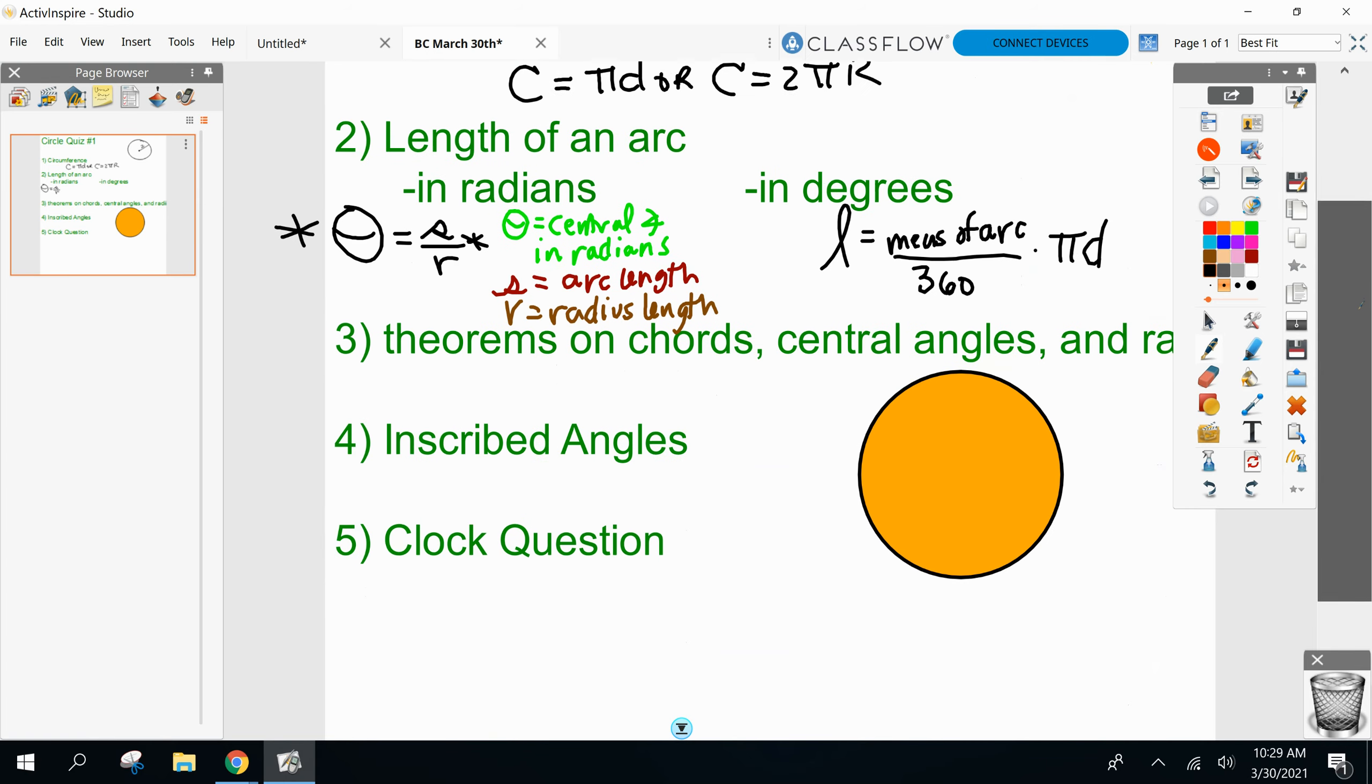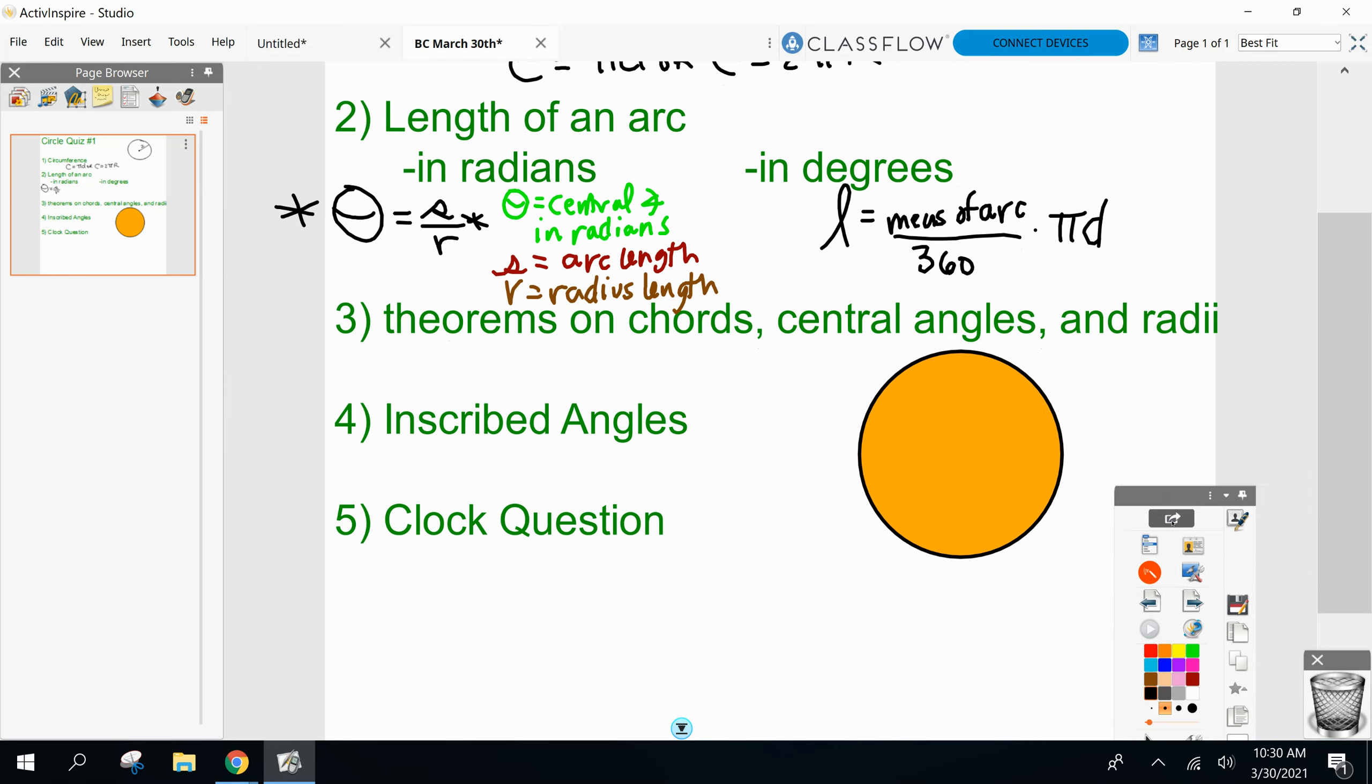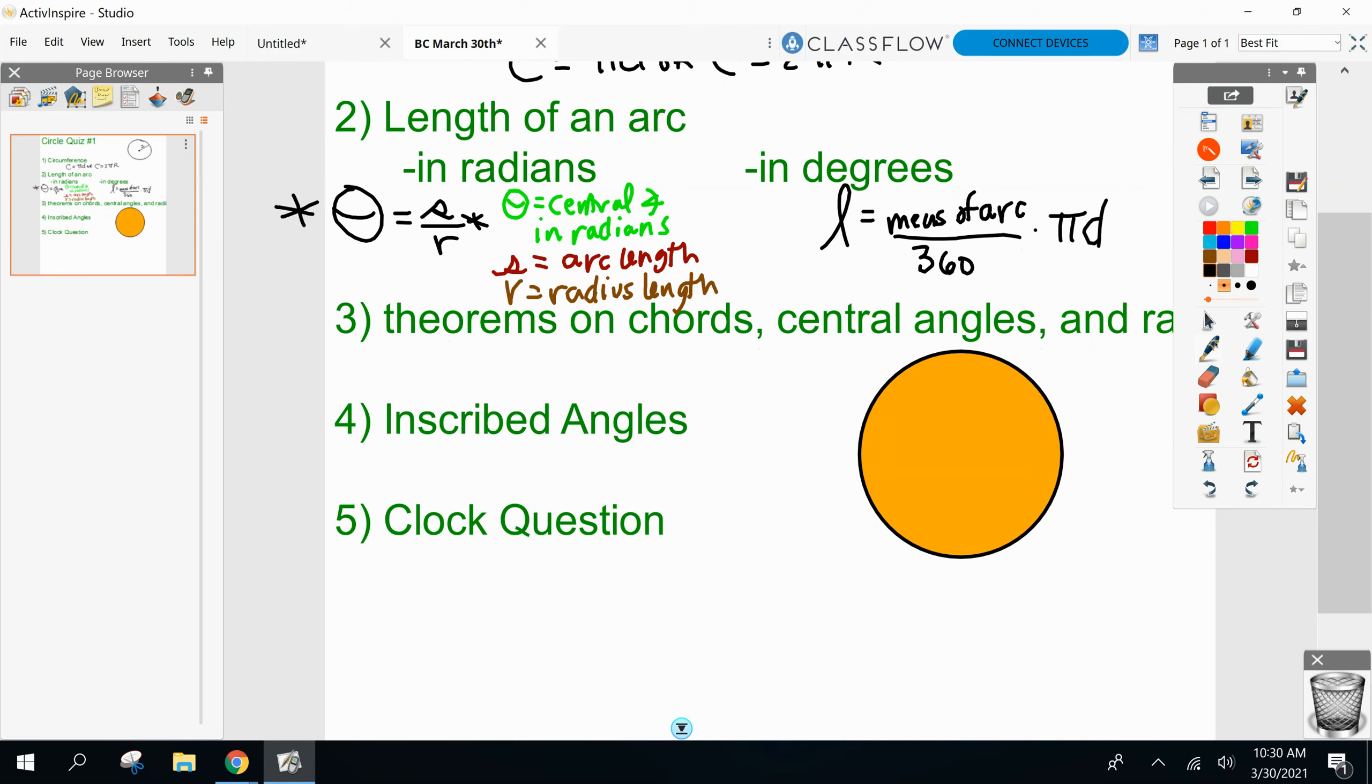We went over a day of I think four theorems on chords, central angles, and radii. Here's what I'm talking about. Here's a chord, here's a chord. Both chords are seven units away from the center. What do I know about the chords? Chords are congruent because they are equidistant from the center.